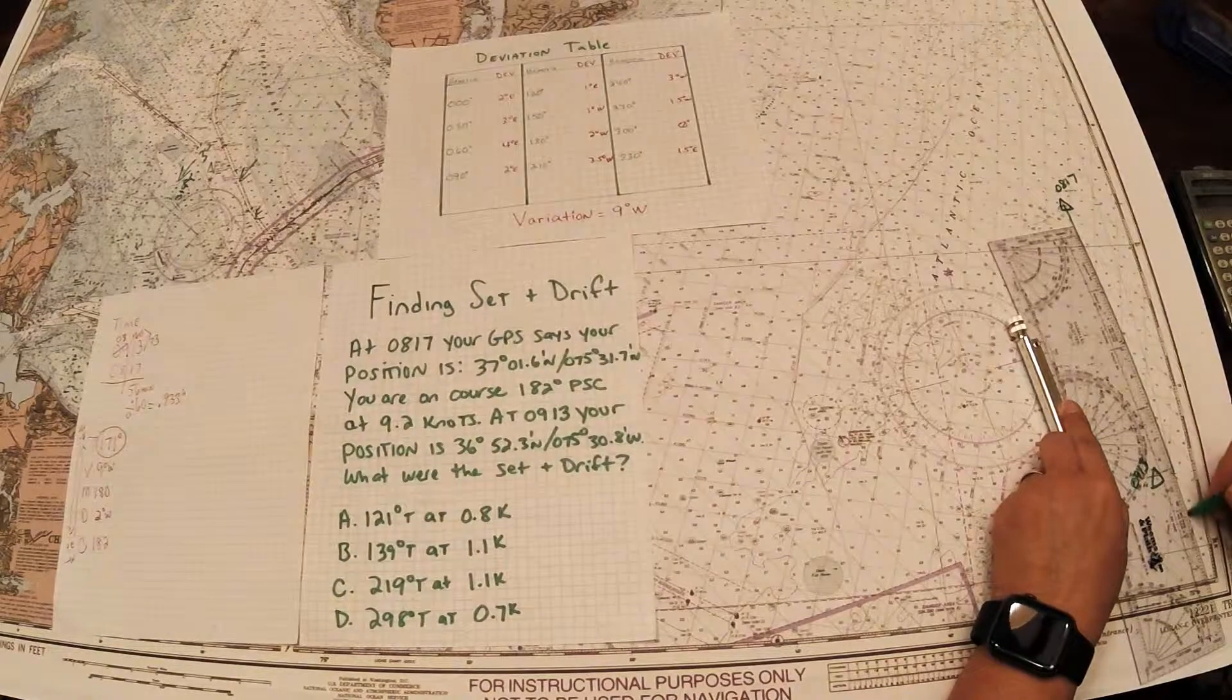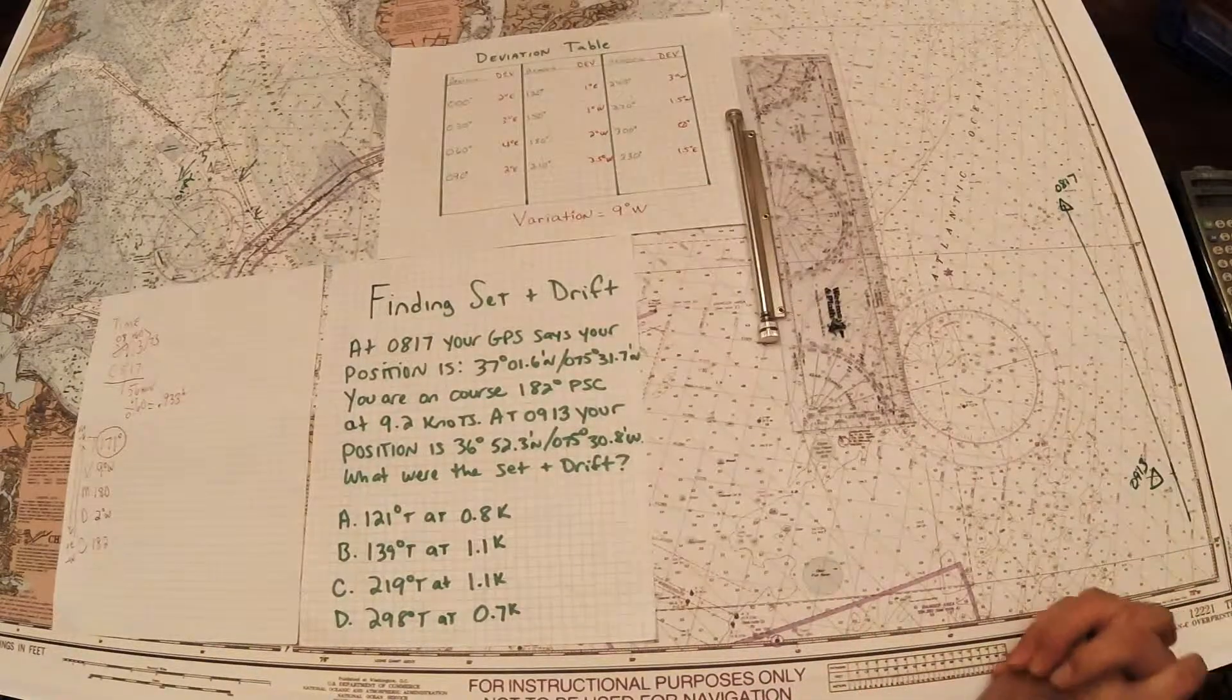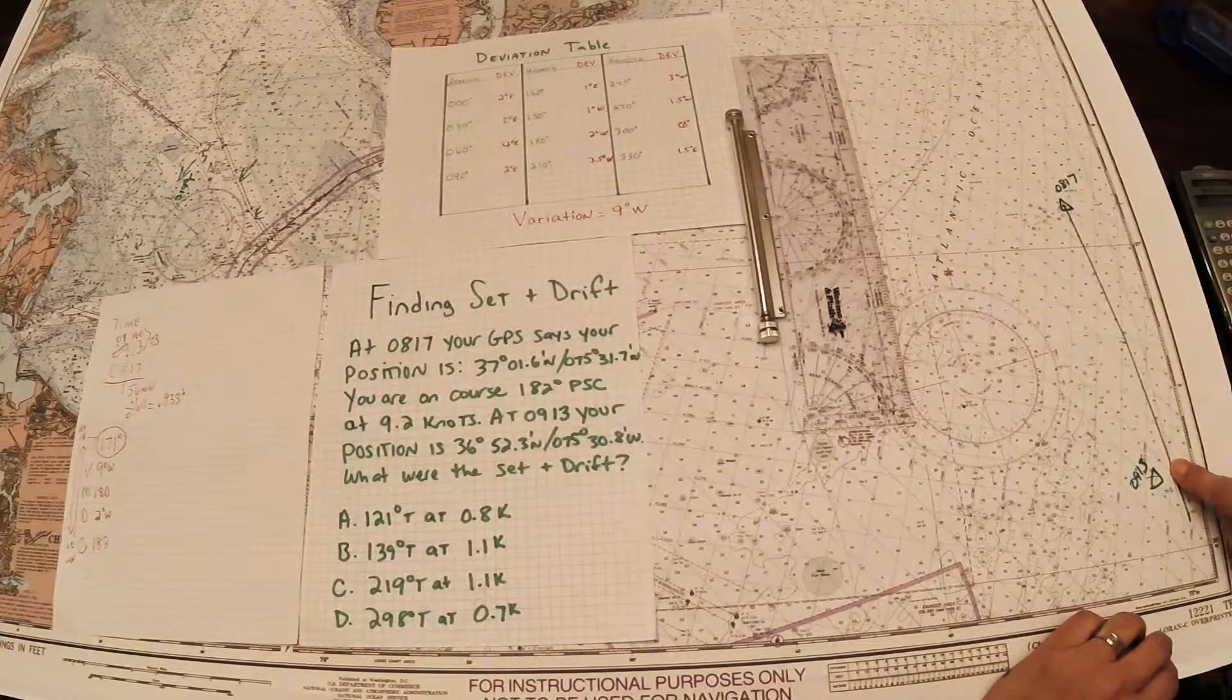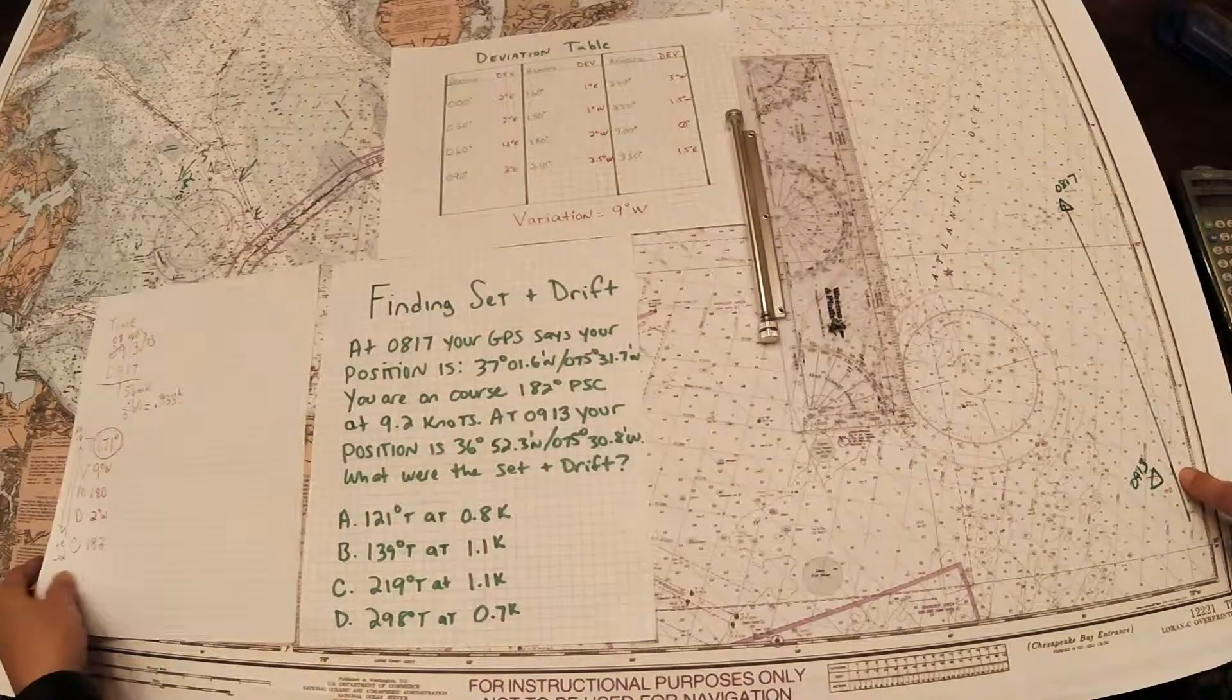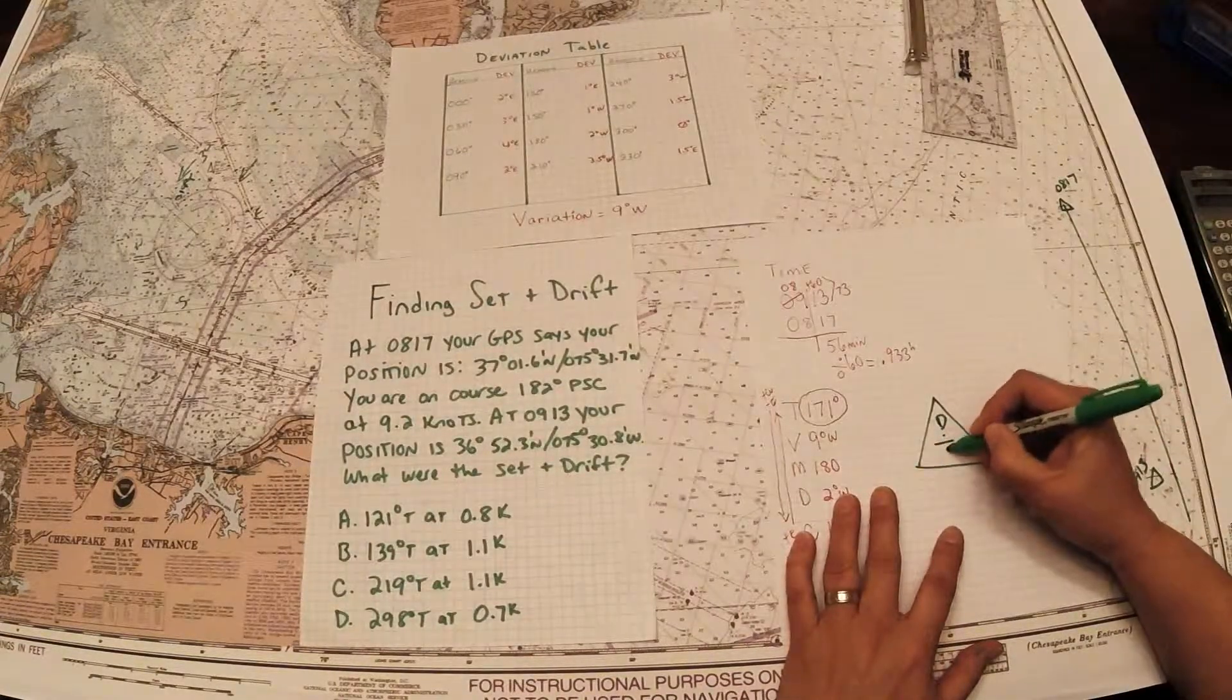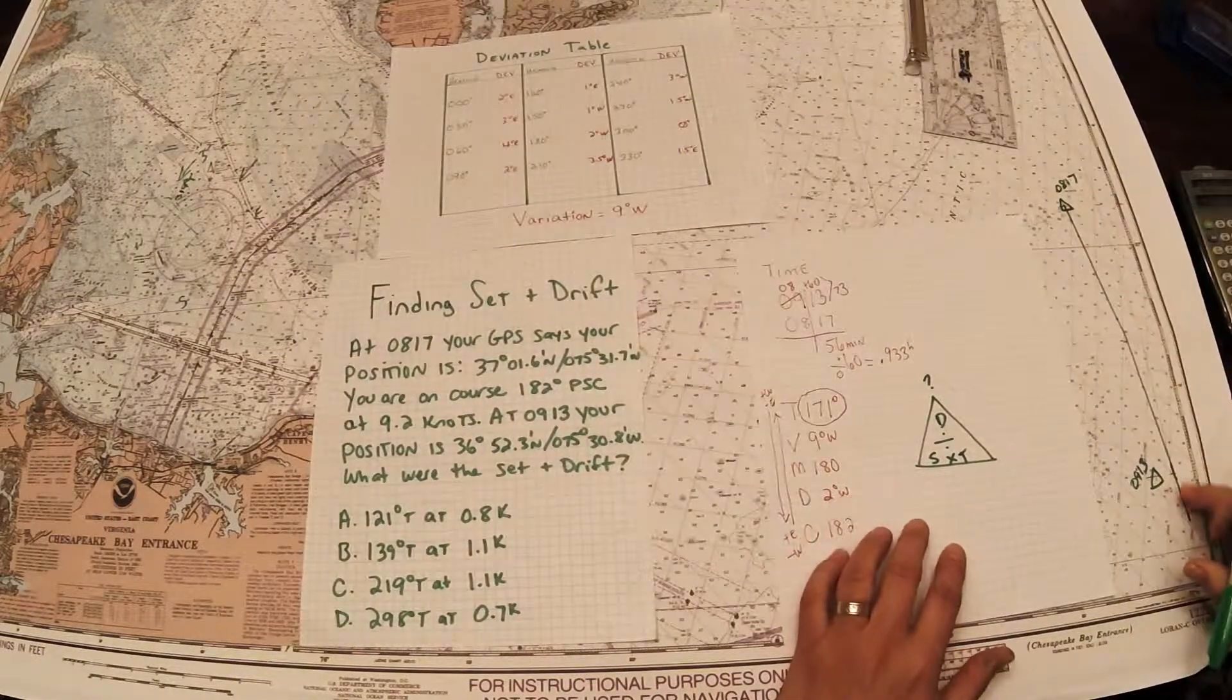Now what we're trying to figure out with current is obviously I did not make this course good, because if I did I would be on that course line somewhere, but I was pushed off. If I would have fallen somewhere on that course line but I didn't, so I know that there's some current pushing me off. What I've got to figure out is where on that line would I have been at 0913. That is solving for distance, so I've got to know how to do a DST triangle.